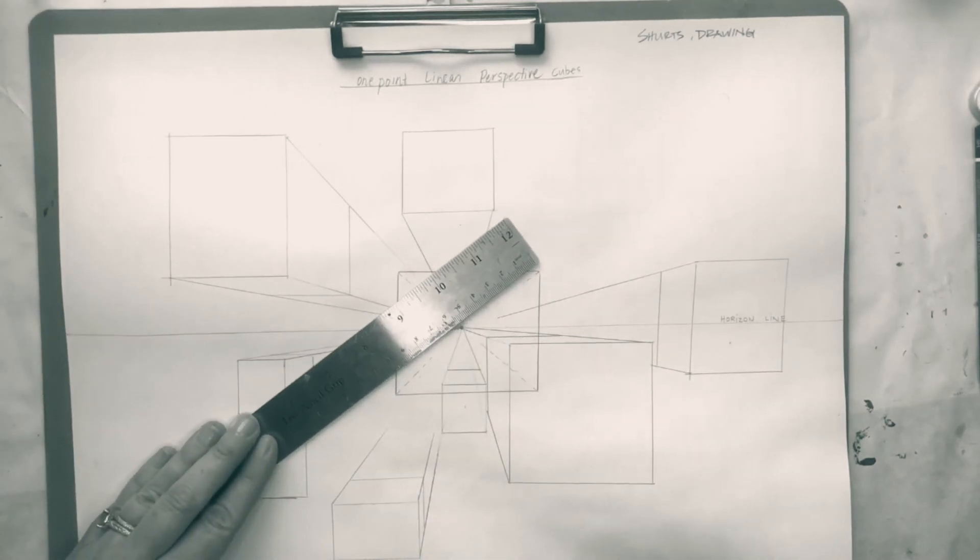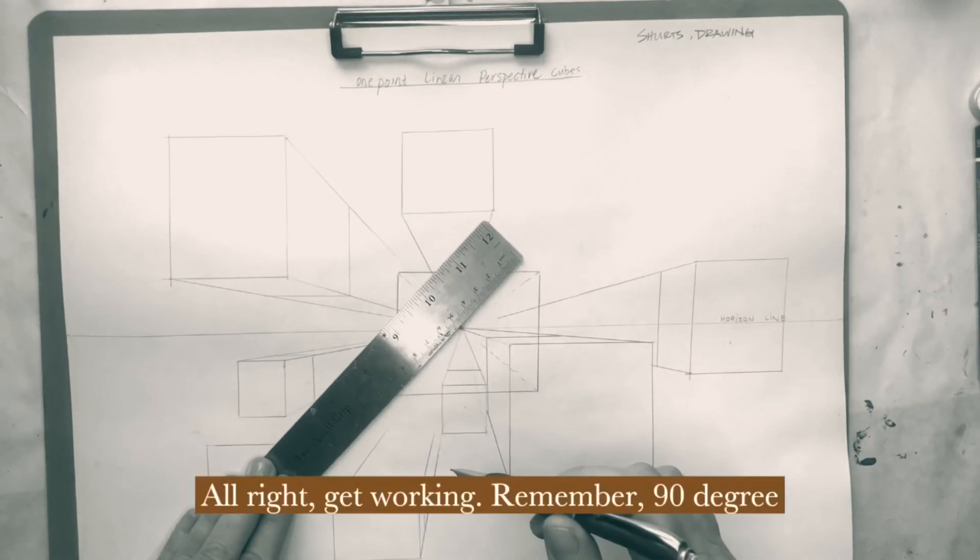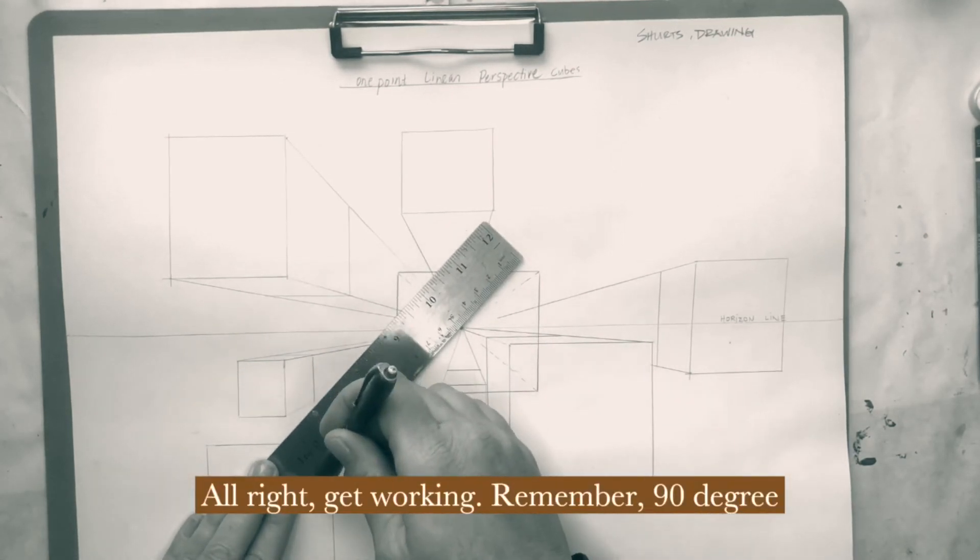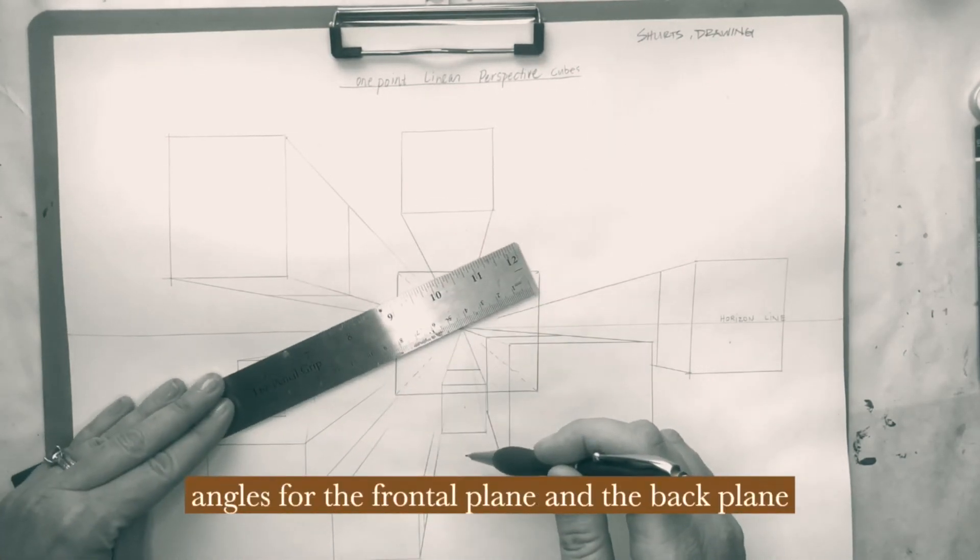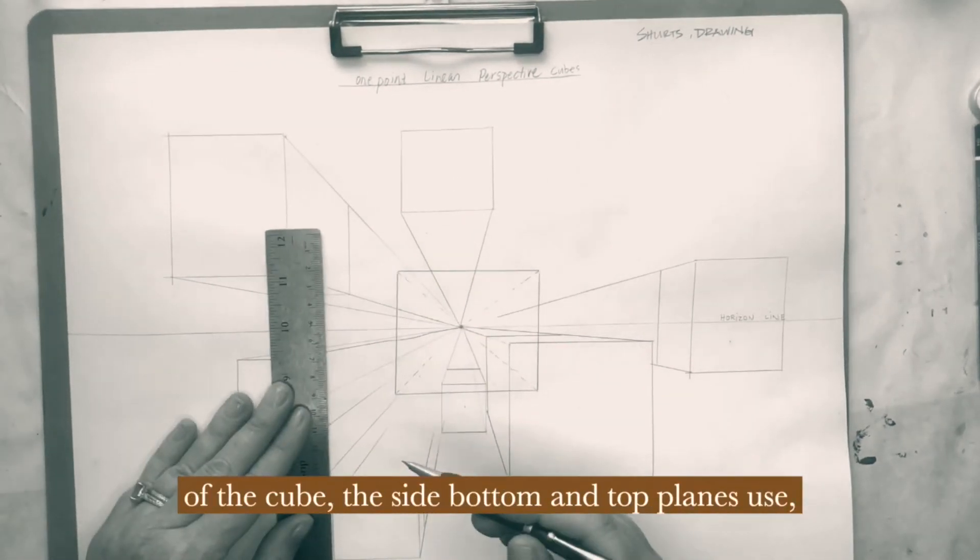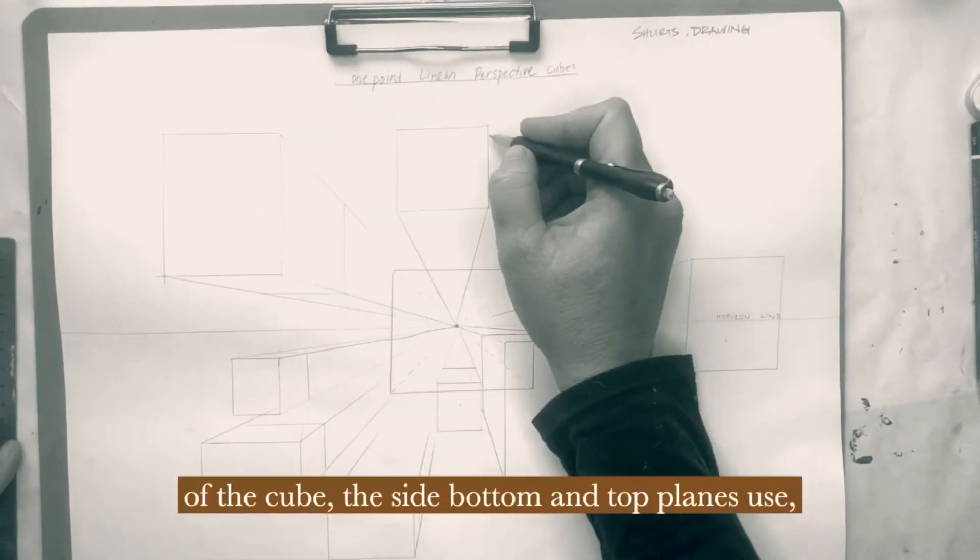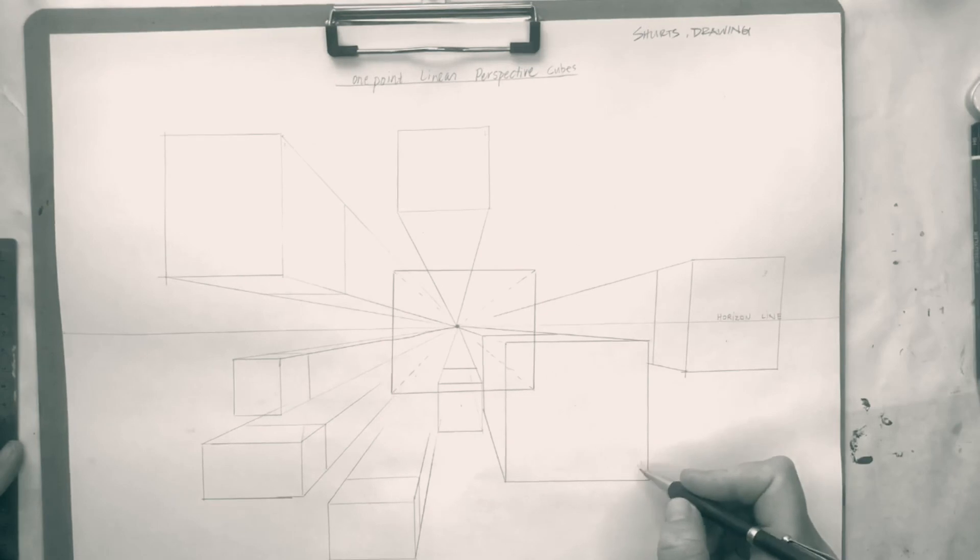All right, get working. Remember 90 degree angles for the frontal plane and the back plane of the cube. The side, bottom, and top planes use orthogonal lines to be created. Have fun.